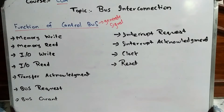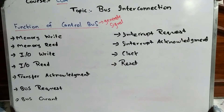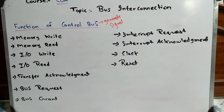Memory write means that you want to write data to memory. The address bus will help locate the address where the data is to be stored, and the data bus will carry the data to be written. This functionality is handled by the control bus.